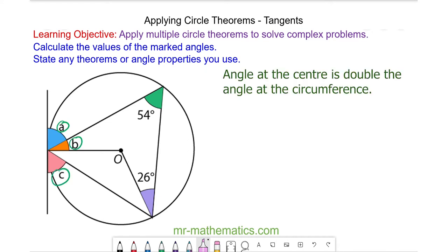We begin with the angle at the center is double the angle at the circumference in this shape here. So because the angle of the circumference is 54 degrees, the angle at the center will be 108 degrees.